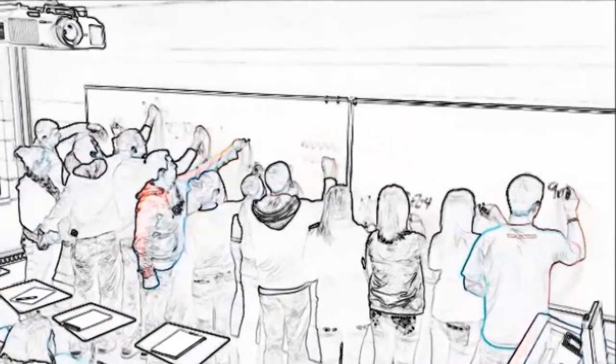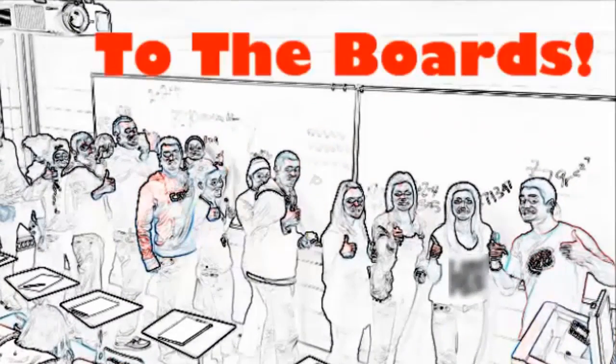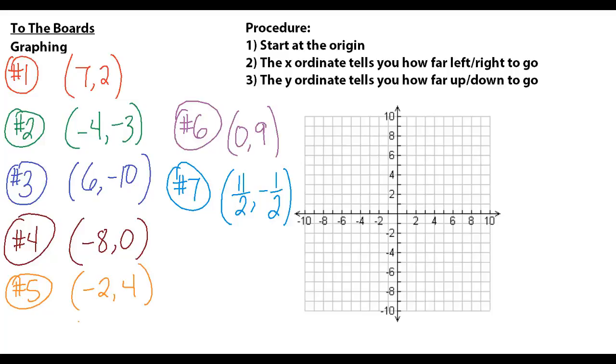To the boards. It's time for you to practice at the boards. Let's take out your notebook and practice graphing these seven points. When graphing you should always start at the origin at 0, 0, this spot right here. Then you're going to look at the x ordinate and it's going to tell you how far right or left to go. If it's positive you go right, if it's negative you go left. You then look at the second ordinate, the y ordinate - if it's positive you go up, and if it's negative it goes down. Go ahead and pause the video, create yourself a little graph in your notebook and graph these seven points.